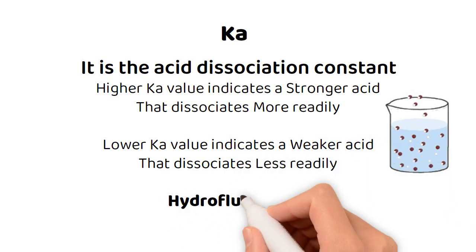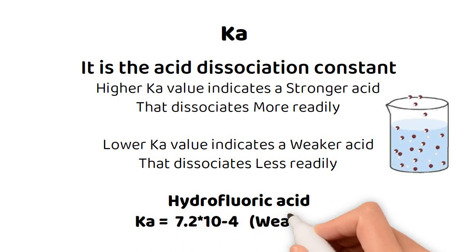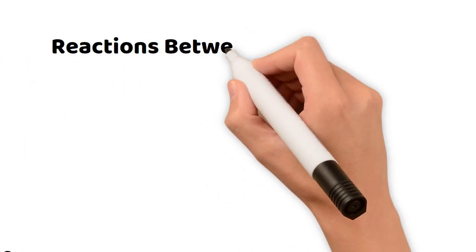Hydrofluoric acid has a Ka value of 7.2 times 10 to the negative fourth power. This shows it is a weak acid.